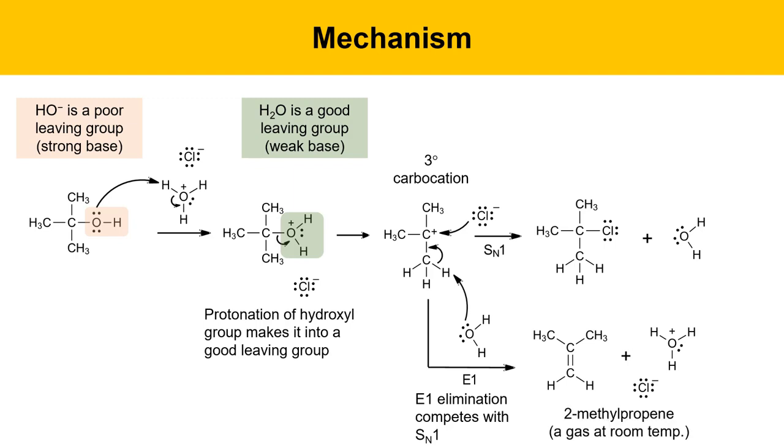The product here is 2-methylpropene, which is a gas at room temperature. It won't be difficult to get rid of this product. It'll just evaporate as it forms, so we won't be able to detect it in the product mixture. We'll just see that something happened in that the yield of tert-butyl chloride is quite a bit lower than we would expect.